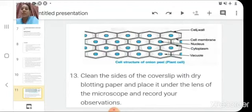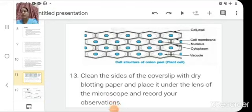In this slide you can see the picture or structure of cells of onion peel. The same type of structure you will see when you will observe your slide under a microscope. Last step while writing procedure will be clean the slides of the cover slip with dry blotting paper and place it under the lens of the microscope and record your observation. When you will record your observation, you will see such kind of structure under microscope in which two main parts will be highlighted very easily, that is the cell wall and the nucleus. In between whatever is present will be your cytoplasm which will contain various other organelles into it.